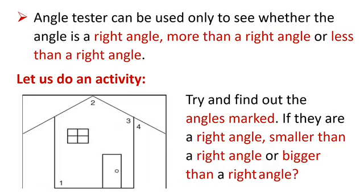With an angle tester, we can say whether the angle is a right angle, more than a right angle, or less than a right angle. Let us do an activity here. You can see a house where four angles are marked. One, two, three, and four. Try and find out what angles they are. A right angle or smaller than a right angle or bigger than a right angle.